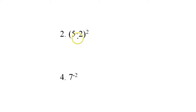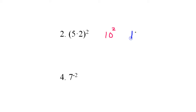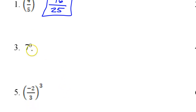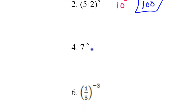For number two, I don't see any reason not to multiply these together, so 5 times 2 is 10, making this 10 squared, and of course 10 squared is 100. Number two is 100. Anything to the 0 power is 1, so there's that.